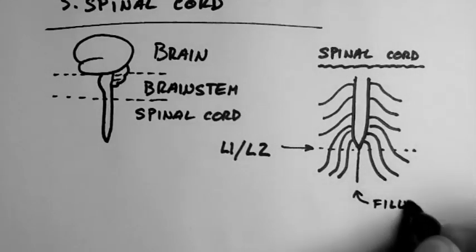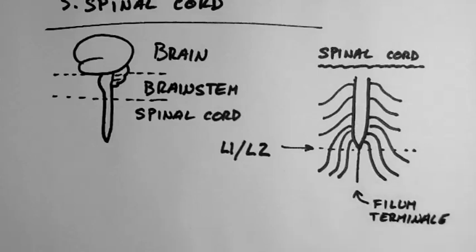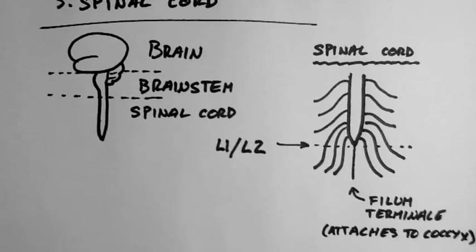This little fibrous band here is the filum terminale and it attaches to the coccyx bone. And it kind of helps keep the spinal cord in place.